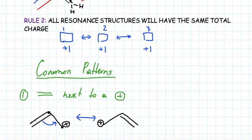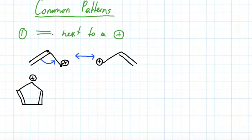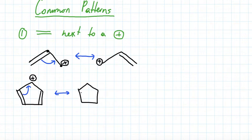Generally, if an element is neutral and gains electrons it becomes negative; if it's neutral and loses electrons it becomes positive. These are our two resonance forms showing the rule: when we have a double bond next to a positive charge, we can move electrons from the double bond to the positive charge. Now let's see this pattern again in another molecule — one with two double bonds and a positive charge on a ring.